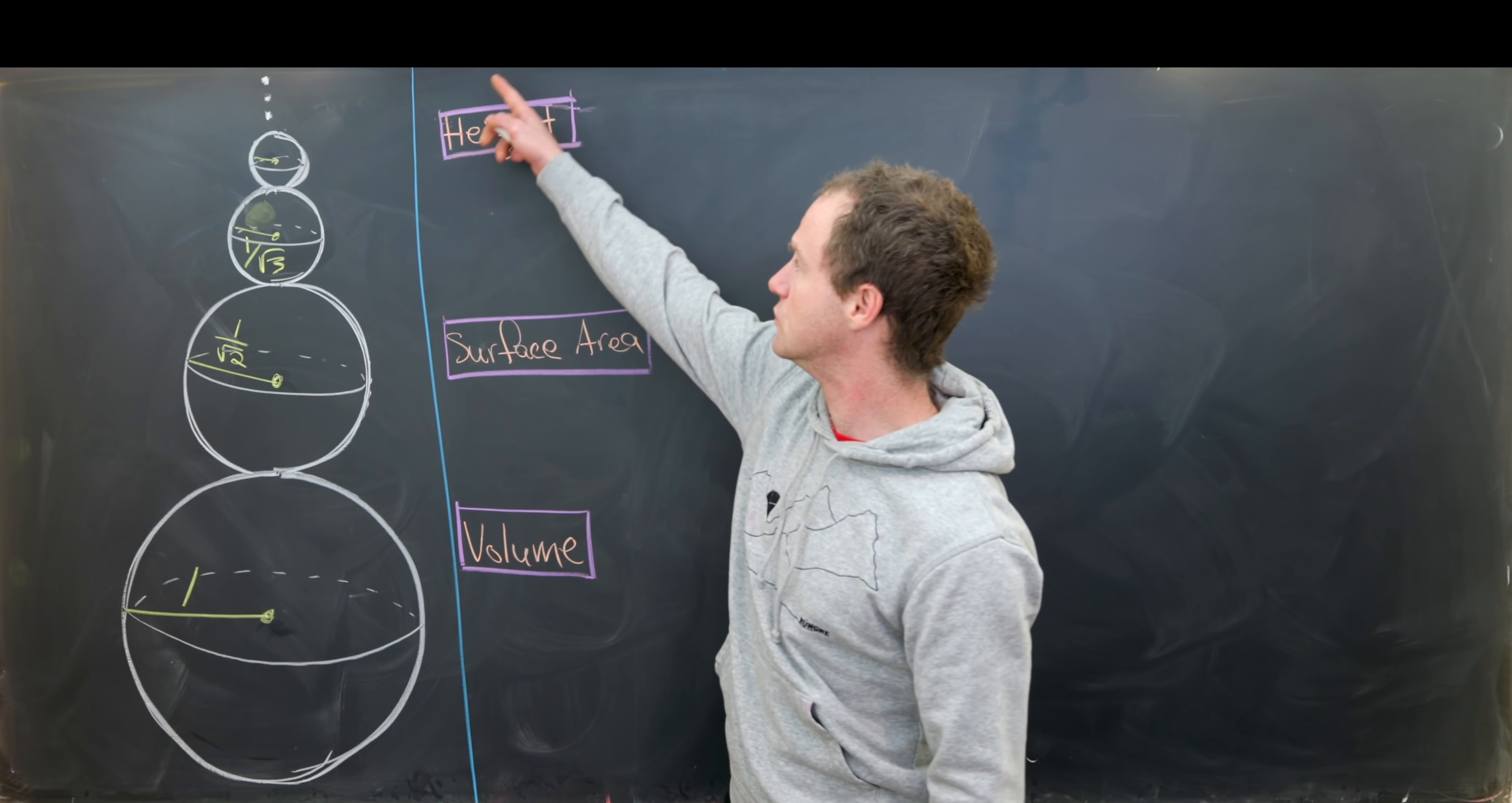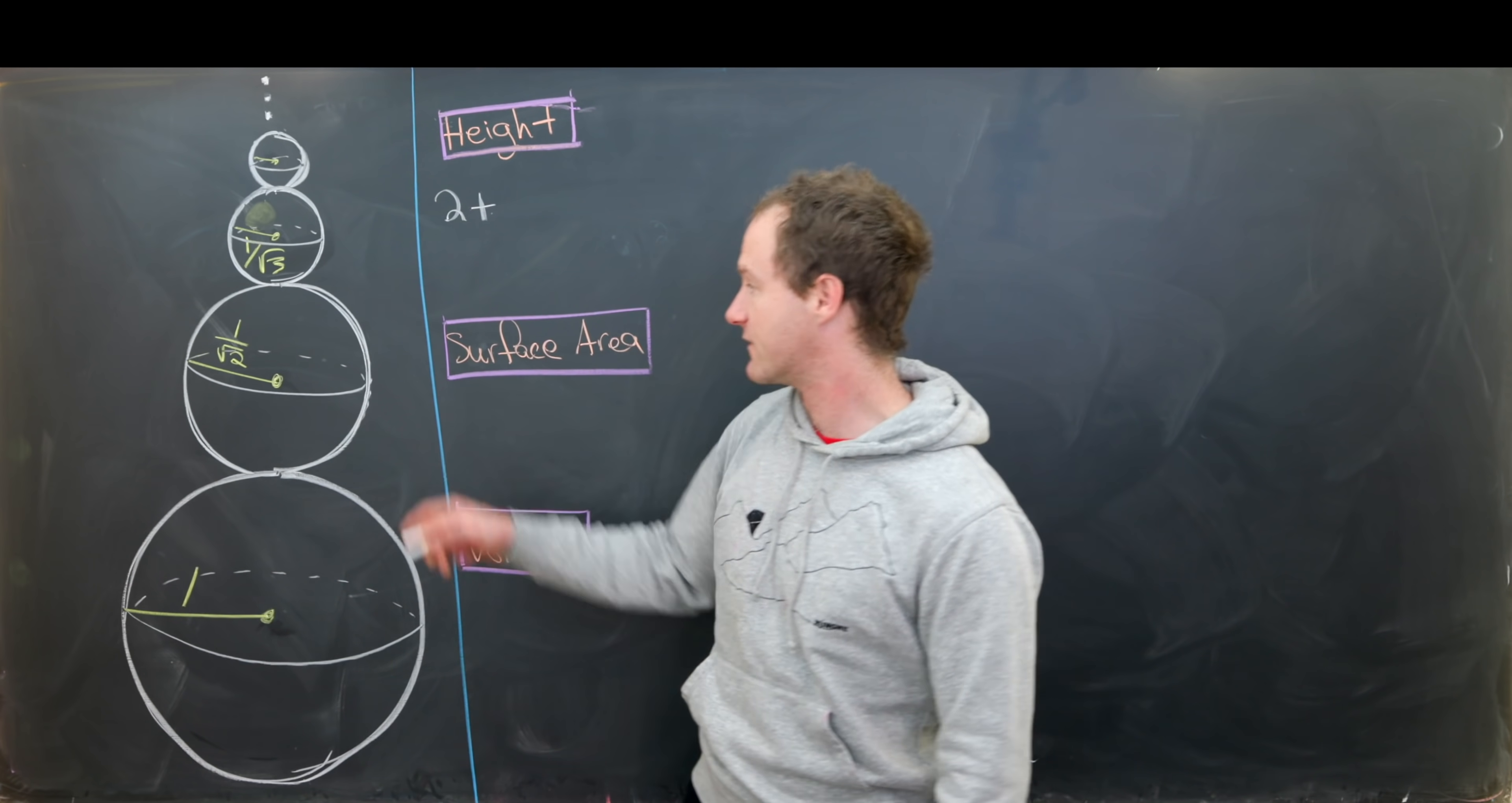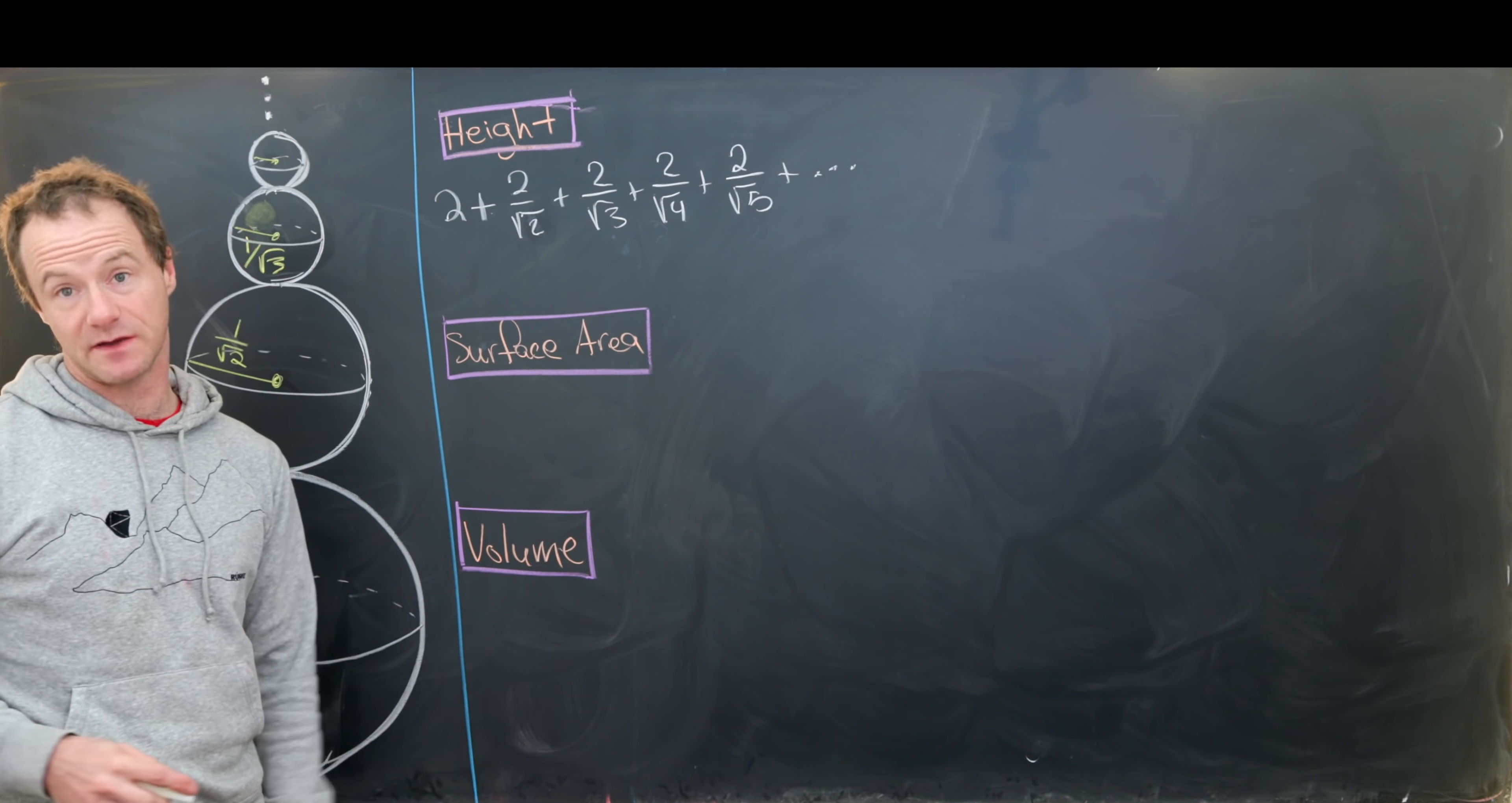So to measure this height, well we're clearly going to measure the height of each of these spheres, but notice the height of each of these spheres is just given by the diameter. So the diameter of this is two, since the radius is one. So we've got two for the first sphere, and then for the second sphere we have two over the square root of two. And then for the third sphere we have two over the square root of three, and then two over the square root of four, and then two over the square root of five, and then so on and so forth. And that extends infinitely. But we could gather that all together in summation notation.